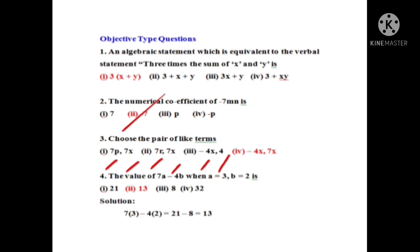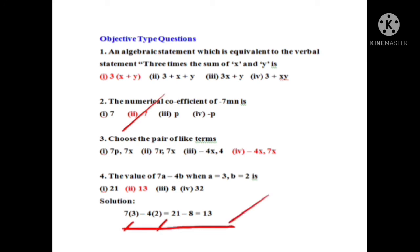Find the value of 7a minus 4b when a equals 3 and b equals 2. So solving: 7 into 3 equals 21, and 4 into 2 equals 8. Therefore 21 minus 8 equals 13. So the correct option is the second option, and 13 is the answer.